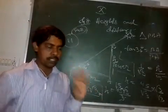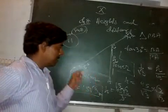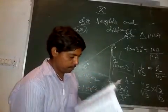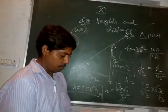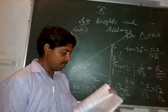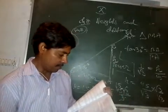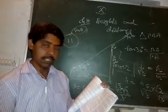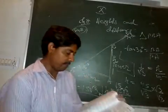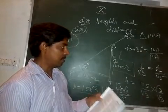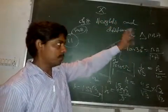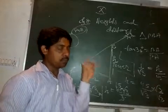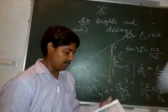I will take one more question to give you an idea of how to draw diagrams for more complicated problems. Question 16 says: the shadow of a vertical tower on level ground increases by 40 meters when the altitude of the sun changes from 60° to 30°. As it gets evening the sun comes down, so at 60° the shadow is small and at 30° the shadow is long. The difference between the two shadows is 40 meters. Find the height of the tower.